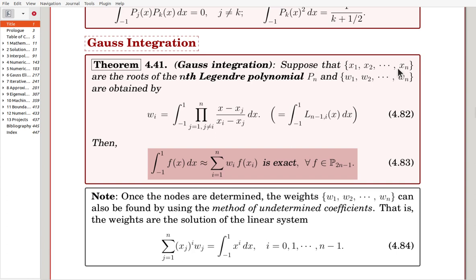Then we can decide the points and rates. The points and rates are exactly the same as here in the theorem. So that the points, if we got them, will be the roots of the Legendre Polynomial. And rates will be also the same. That's the theorem and Gauss integration. So that here, once the knots are determined from the nth Legendre Polynomial, then we can use the method of undetermined coefficients to find the rates. That is exactly this one, by using the trial functions.